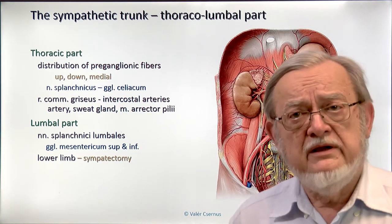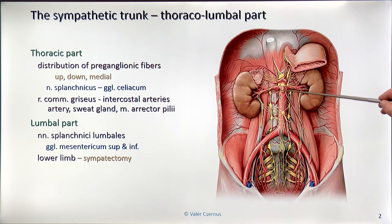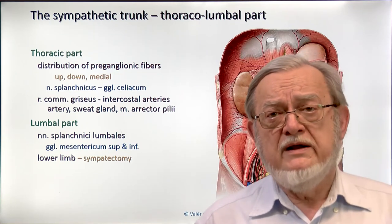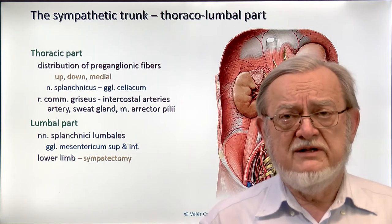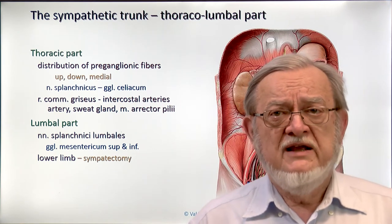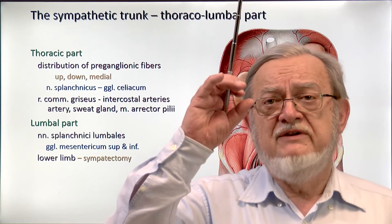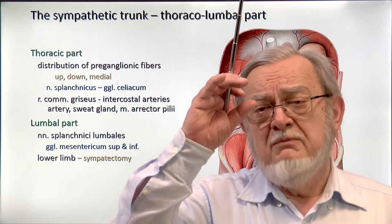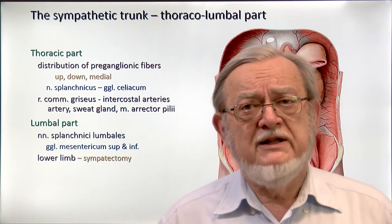There is a medical therapeutic measure of removing the entire lumbar part of the sympathetic trunk, which is named sympathectomy. This is done in patients where circulation of the lower limb is very poor. When the sympathetic trunk is removed, the sympathetic activity is eliminated and there is a small dilation of the artery. Unfortunately, this can only postpone by a couple of months the complete removal of the limb.